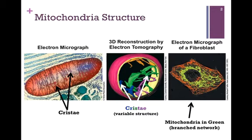As you can see, the cristae, highlighted in the different colors of blue and green and purple and yellow, and marked by the white arrows, is highly variable in structure, not a regular structure that we might expect in looking at the figure on the left. If we examine the electron micrograph of the fiberglass cell on the far right, we can see the mitochondria. The mitochondria are highlighted in green here.